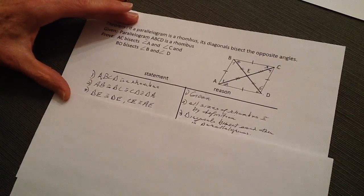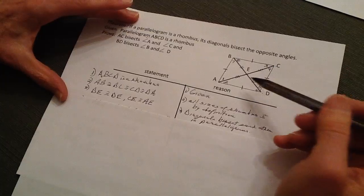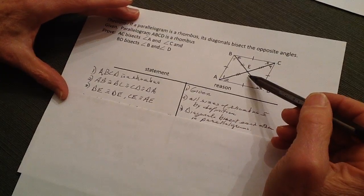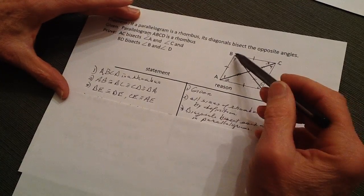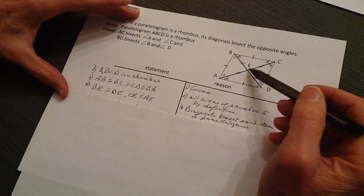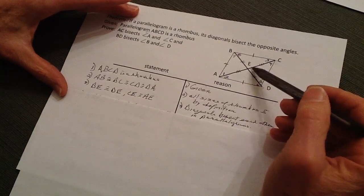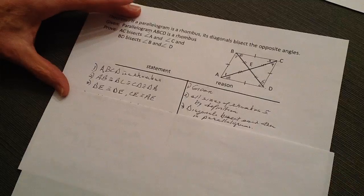Likewise, I've already mentioned that the diagonals bisect each other, so this portion AE has got to be equal to DE. Likewise, CE has got to be equal to AE because they've been bisected.